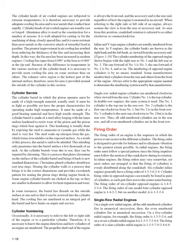Single-row radial engine cylinders are numbered clockwise when viewed from the rear; cylinder No. 1 is the top cylinder. In double-row engines, the No. 1 cylinder is the top one in the rear row; No. 2 is the first one clockwise from No. 1 but in the front row; No. 3 is the next one clockwise in the rear row. Thus, all odd-numbered cylinders are in the rear row, and all even-numbered cylinders are in the front row.